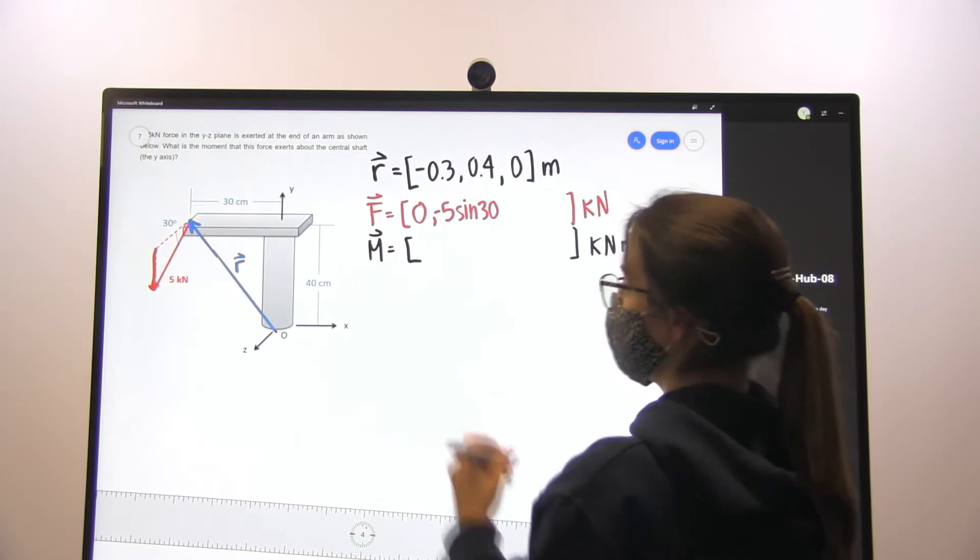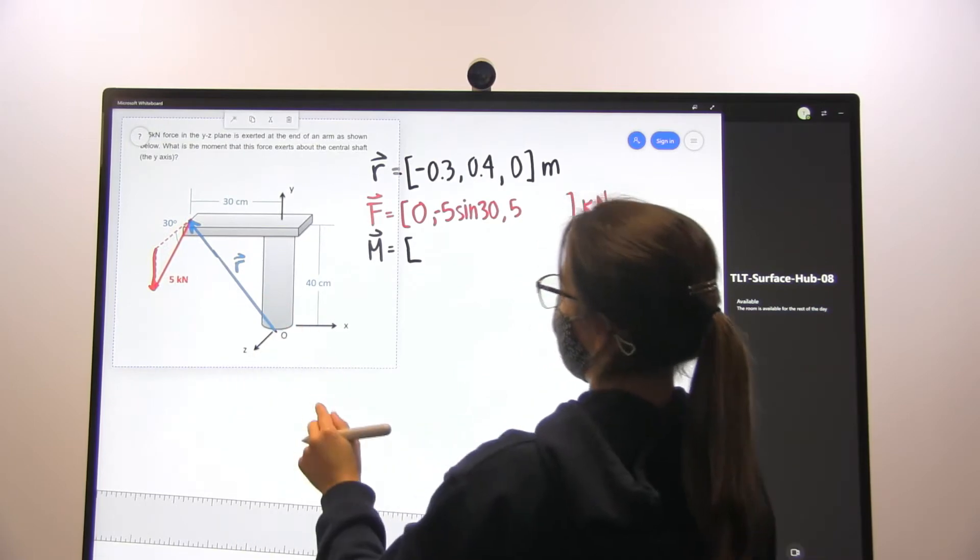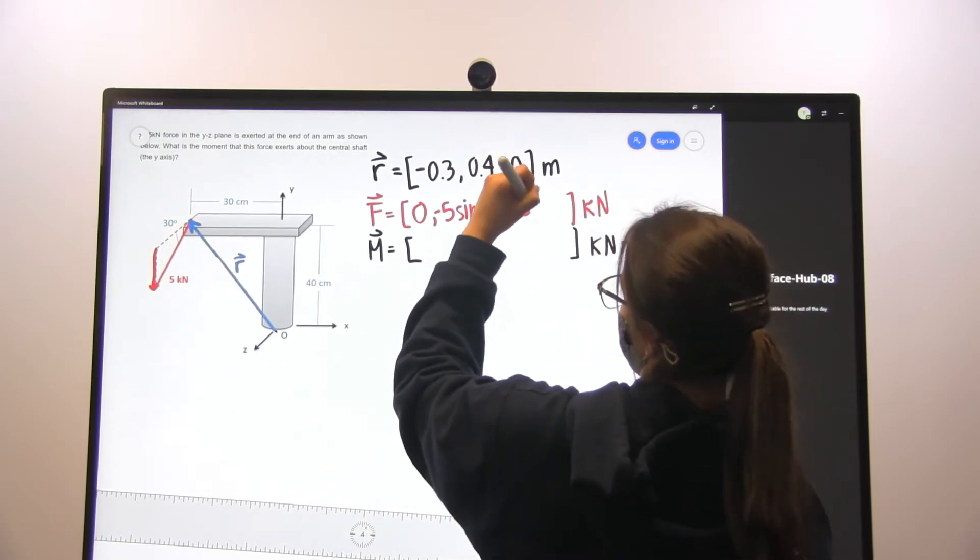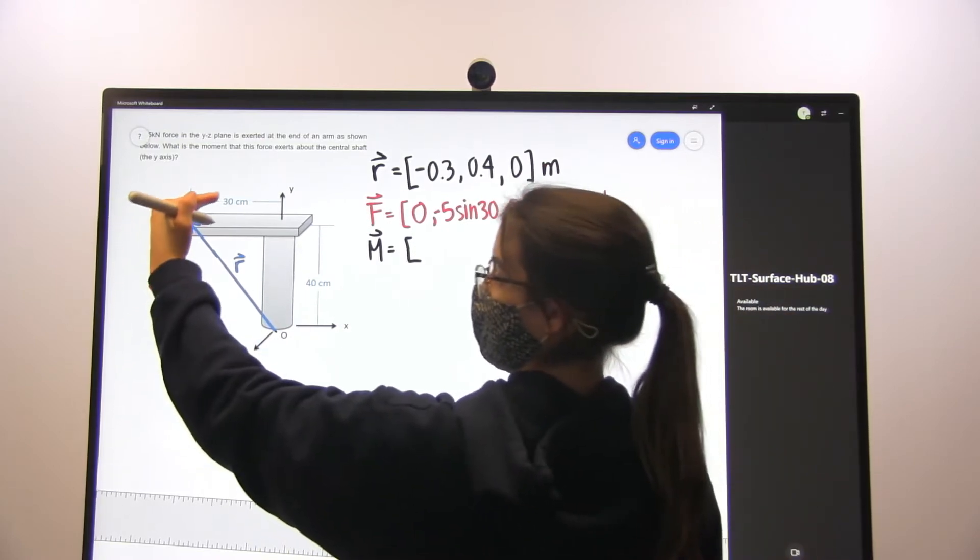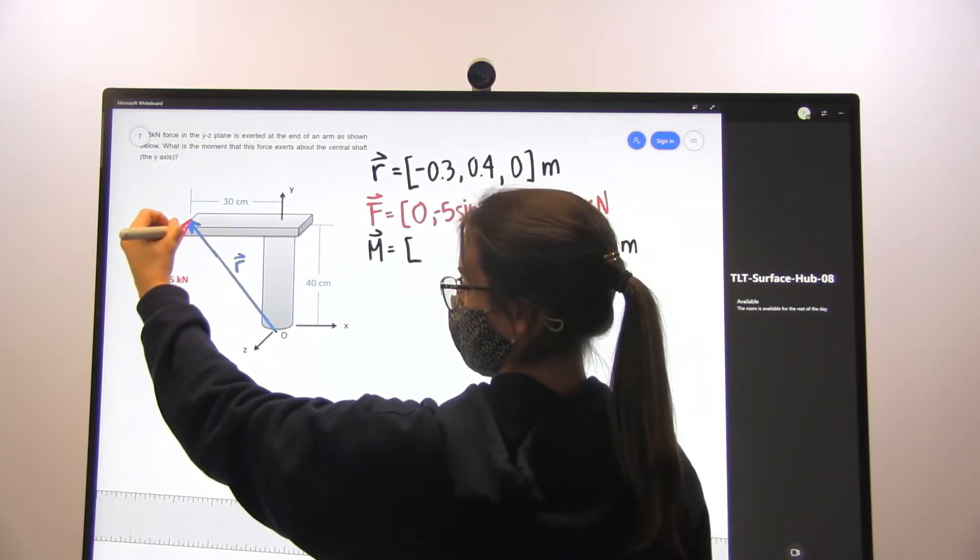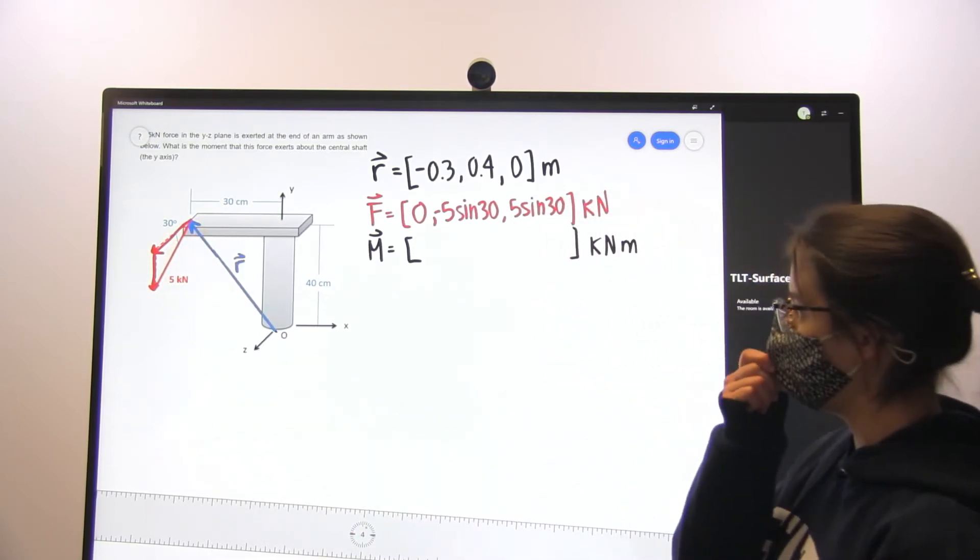And it is also 5 kN in the positive z-direction, so 5 sine 30. We can see that this component, the forward component or out of the page, is the sine component of that force.